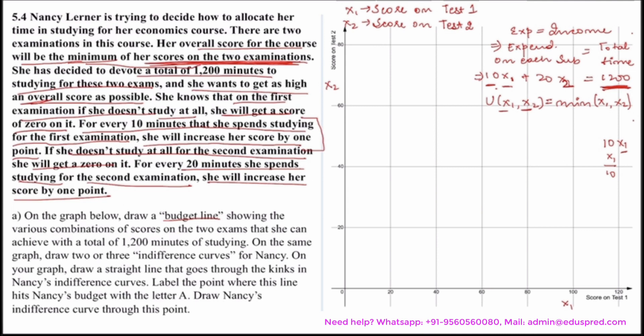This is the equation of the budget line. The question asks to graph it showing the various combinations of two exam scores achievable with 1200 minutes. Since score on test 1 (x1) lies on the x-axis and score on test 2 (x2) lies on the y-axis, you can easily draw this line using basic geometry — this would look like the red line on the graph. The question further says to draw two or three indifference curves for Nancy. This is the equation for her utility — minimum of x1, x2 — and since the utility function is of the minimum form, it means it's a perfect complement, and perfect complements have an L-shaped graph.